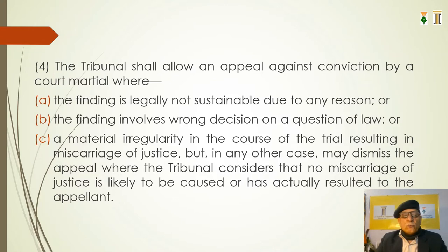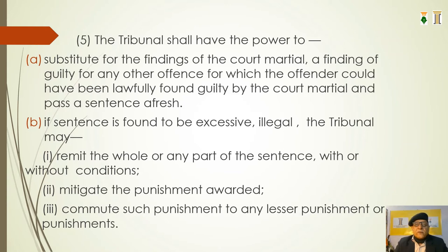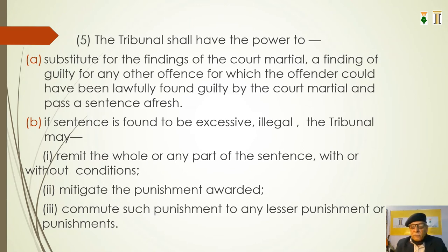Where the tribunal considers that no miscarriage of justice is likely to have been caused or has actually resulted to the appellant, it may dismiss the appeal. Clause C surfaces only when there is a substantial miscarriage of justice. The tribunal has also been given power to substitute the finding of a court martial — a finding of guilty — for any other offense for which the offender could have been lawfully found guilty, and pass a sentence afresh. If the sentence is found to be excessive or illegal, the tribunal may remit, mitigate, or commute it — the same powers that were available to the confirming authority are also available to the Armed Forces Tribunal.